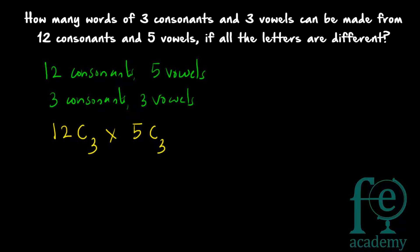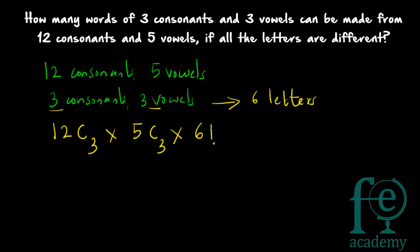Now how many letters are there? 6 letters. We are having 3 consonants and 3 vowels, so these words will be of 6 letters each. So these 6 letters can be arranged in how many ways? All the letters are different — there will be 12 different consonants and 5 different vowels, so all 6 letters are different. The 6 letters can be arranged in 6 factorial ways, since n objects can be arranged in n factorial ways. So totally your answer will be 12C3 into 5C3 into 6 factorial.